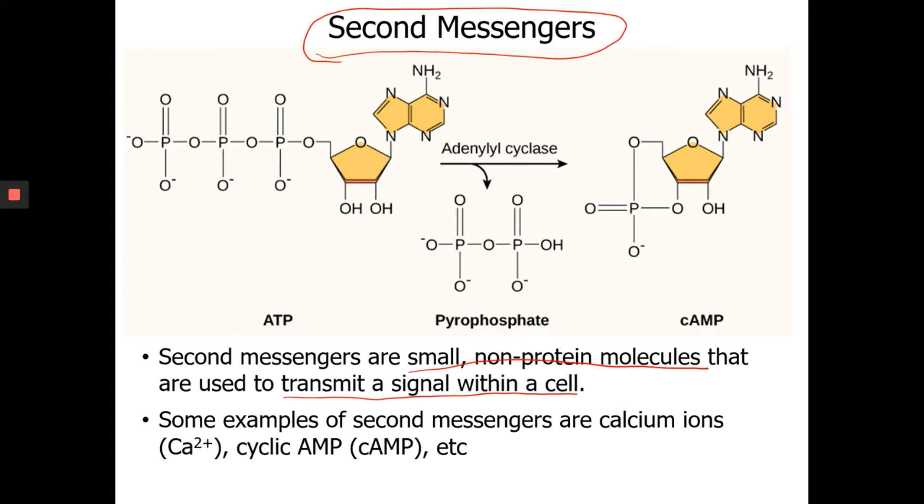Some examples of second messengers are calcium ions. If you remember calcium ions, we had that in the first test. Cyclic AMP. A lot of times we just write it out as cAMP. If you remember ADP, ATP, now the AMP stands for mono. So you only have one phosphate group. These two, calcium ion and cAMP, these are common second messengers.